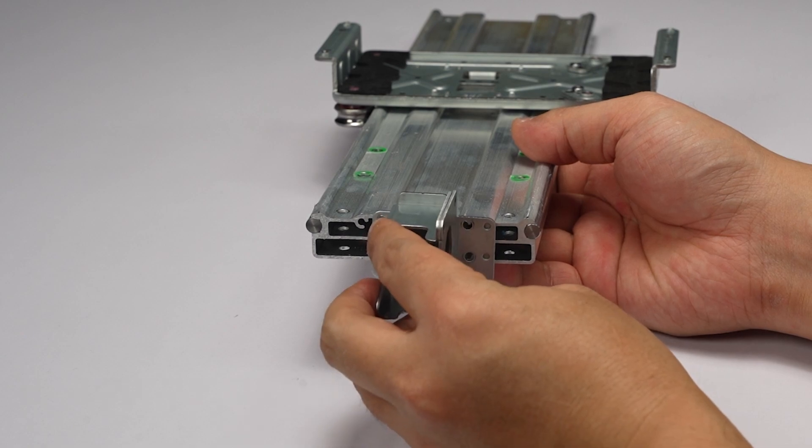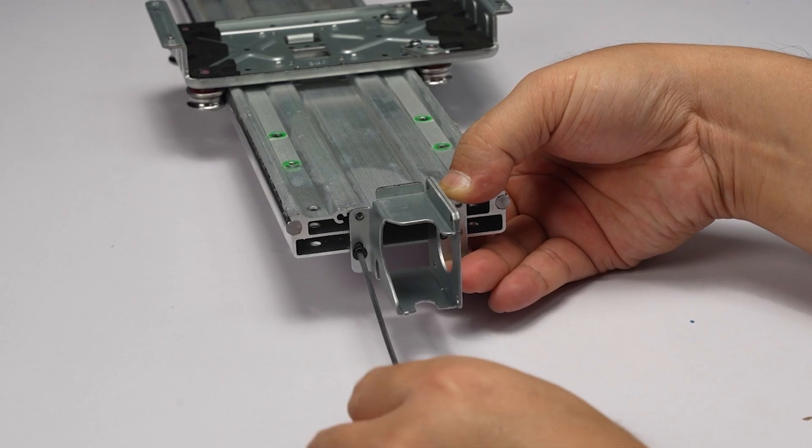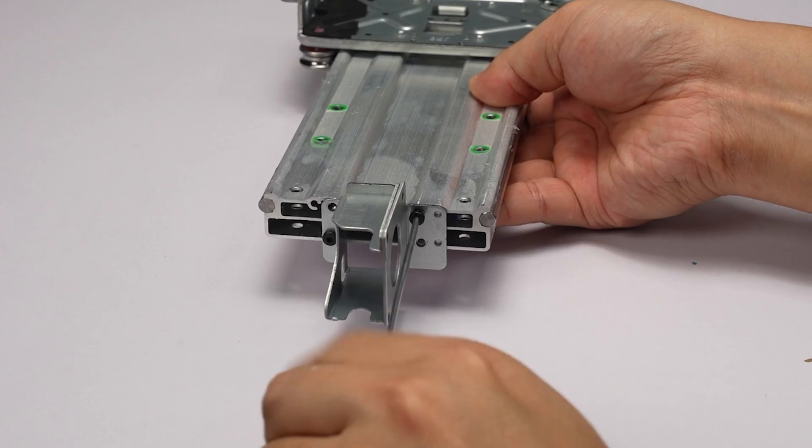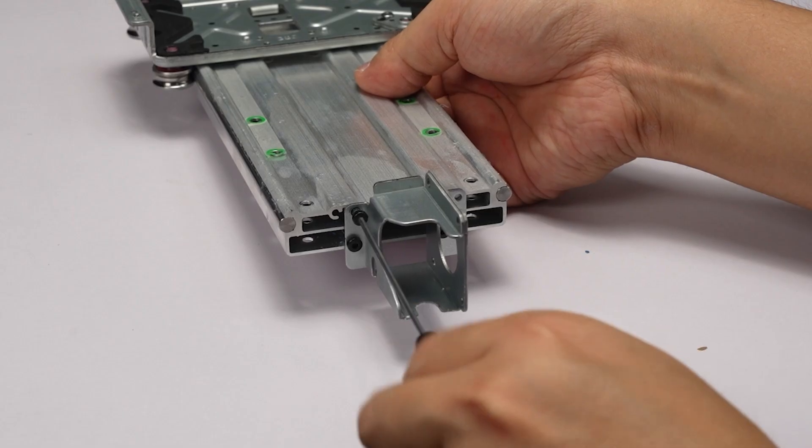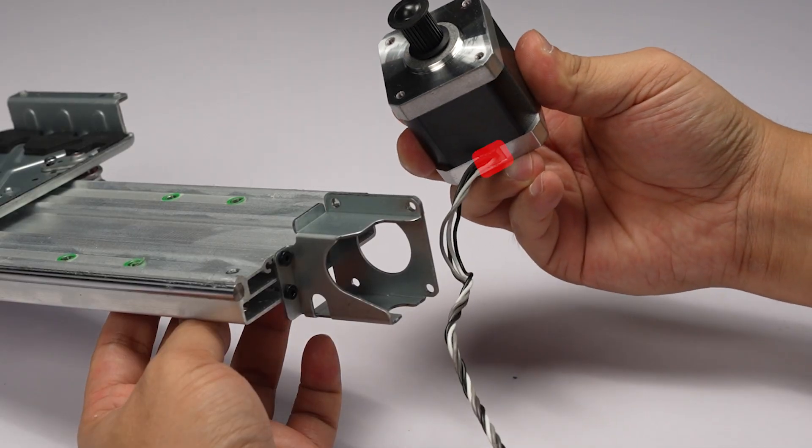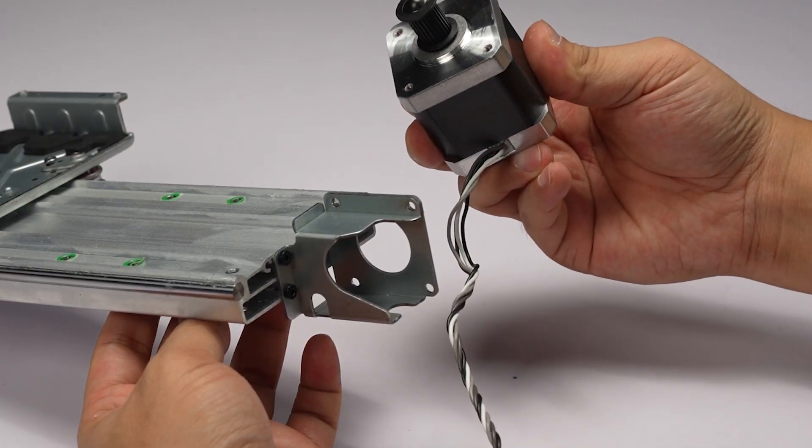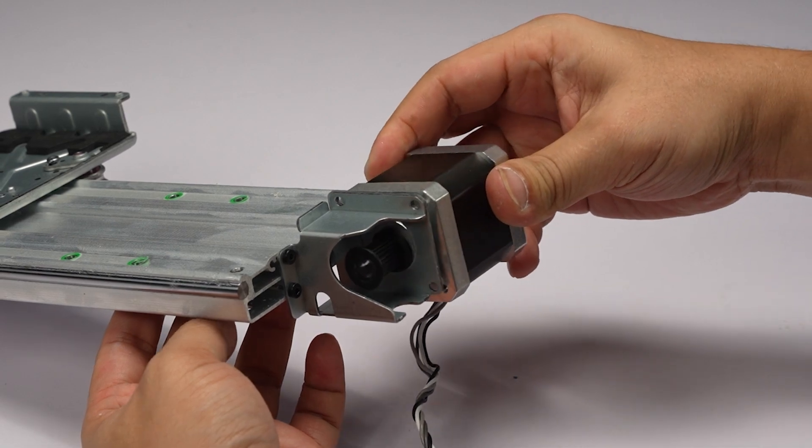Install the Y motor holder and lock in four screws. Install the Y motor. The motor cable should be faced downwards and lock in the four screws.